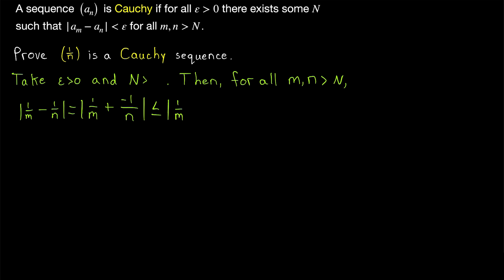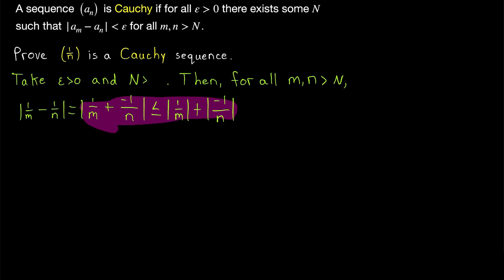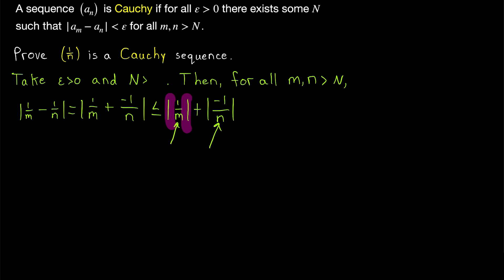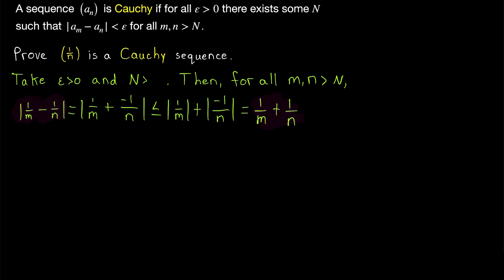This is certainly less than or equal to the individual absolute values of the pieces — that is, the absolute value of 1 over m plus the absolute value of negative 1 over n. That's by the triangle inequality. I'll leave a link in the description to my lesson proving that. Now, m and n are natural numbers, so the absolute value bars aren't going to do anything to those. The absolute value bars will turn negative 1 over n into positive 1 over n. So all in all, this expression equals 1 over m plus 1 over n. Remember, we're trying to show that this is less than epsilon.